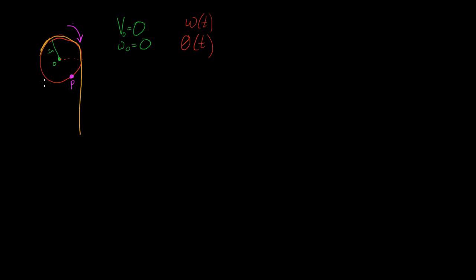Let's say we have this wheel and this rope, and we pull on the rope giving it an acceleration equal to 4t meters per second squared. We're told that this system is initially at rest, so its initial velocity is zero and its initial angular velocity is zero. We're asked to find the angular velocity and angular position as a function of time, and we'll call the angular position of point P theta.